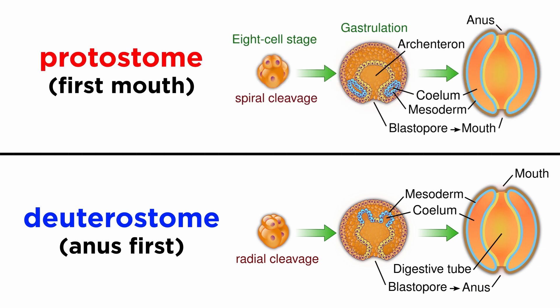The term protostome comes from the Greek word protostoma, meaning first mouth, whereas the term deuterostome essentially translates to second mouth. So in protostomes, during the process of gastrulation, the mouth forms before the anus. Meanwhile in the deuterostomes, the anus forms before the mouth.